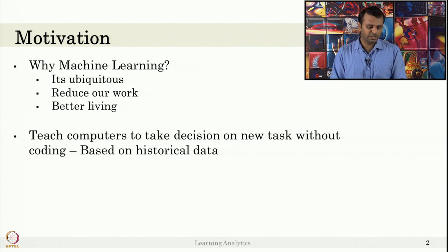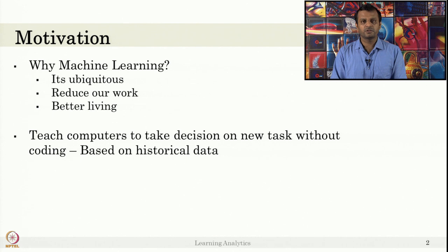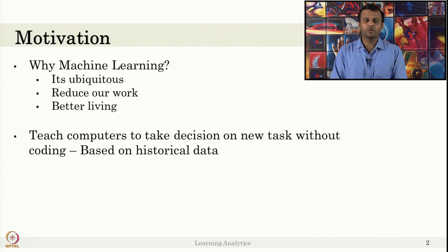What is machine learning in a very basic sense? It is about teaching computers to take decisions on new tasks without human intervention or without writing a code. It learns the algorithm based on historical data, so the computer should take its own decisions when a new task comes. This is based on historical data the computer collected, or that humans provided, or through human-created algorithms.